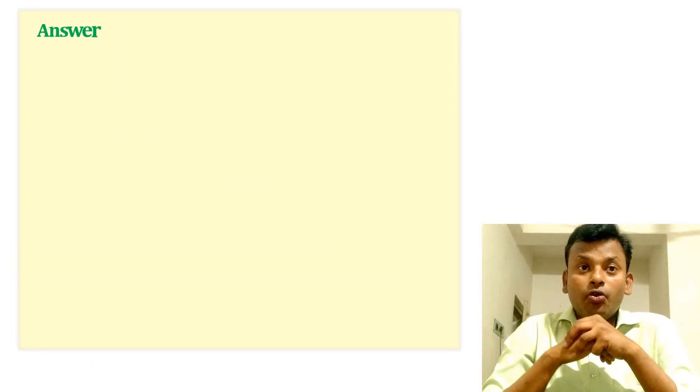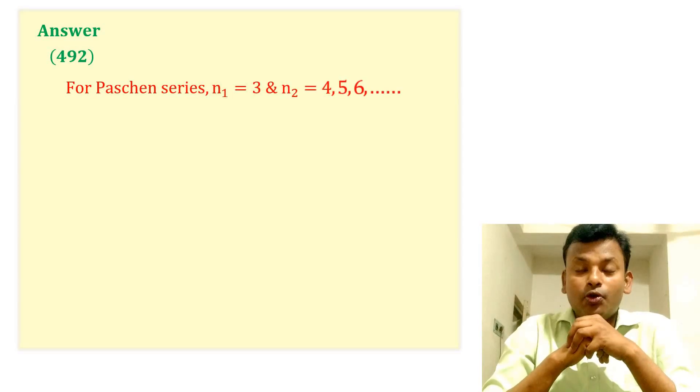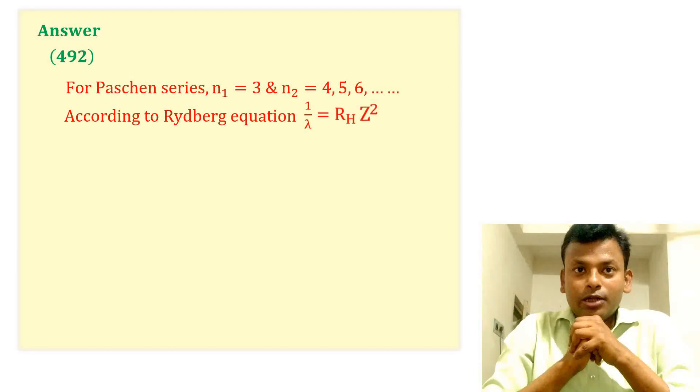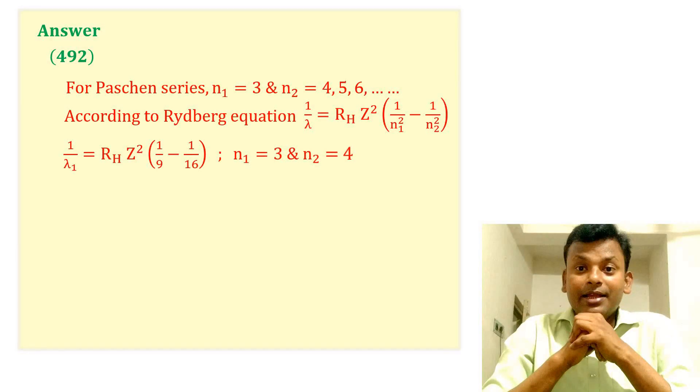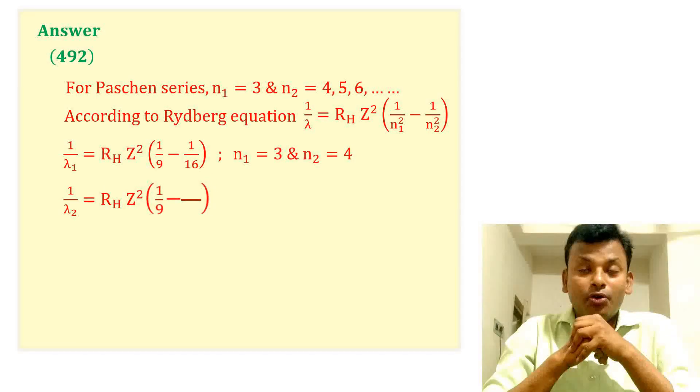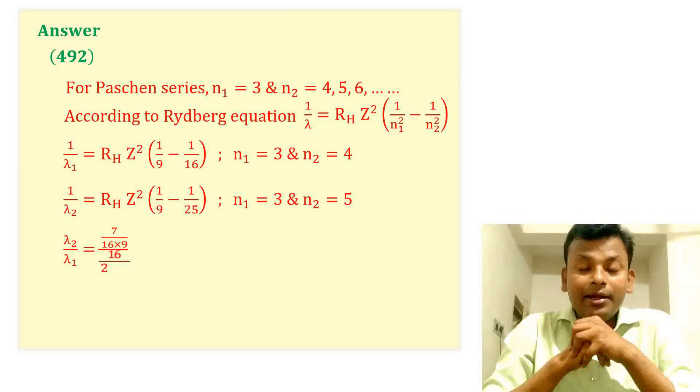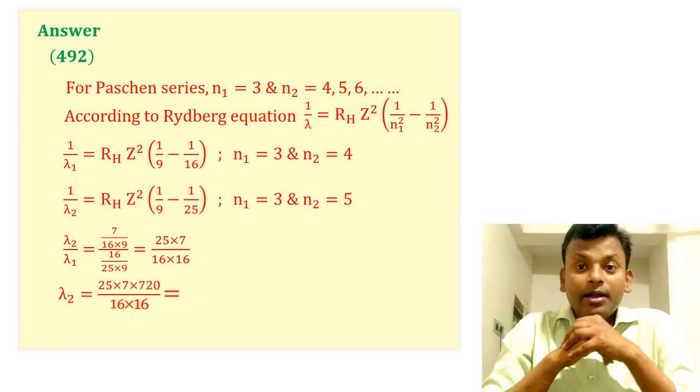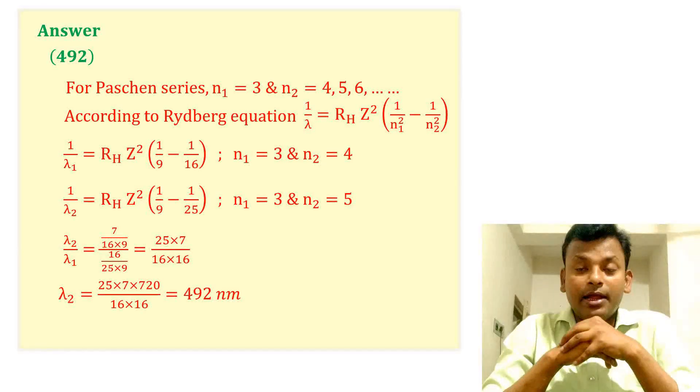Answer is 492. For Paschen series, n1 equals to 3, n2 equals to 4, 5, 6, dot dot dot. According to Rydberg equation, 1 by lambda equals to RH into Z square into 1 by n1 square minus 1 by n2 square. For first line, n1 equals to 3, n2 equals to 4. For second line, n1 equals to 3, n2 equals to 5. Divide the two equations and get lambda equals to 492 nanometer. So answer is 492 nanometer.